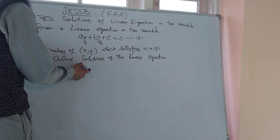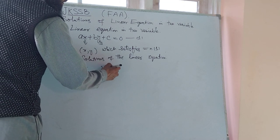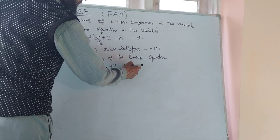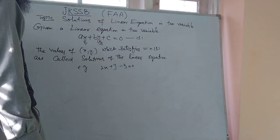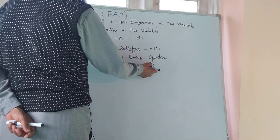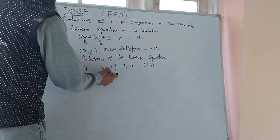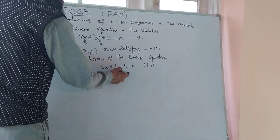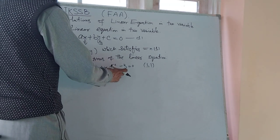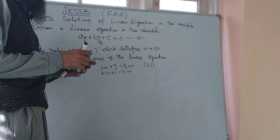Example: if we take 2X plus Y minus 3 equal to 0, clearly when X is 1 and Y is 1, substituting we get 2 into 1 plus 1 minus 3, that is 2 plus 1 minus 3, which is 3 minus 3 equal to 0. So (1, 1) is clearly a solution of this linear equation.